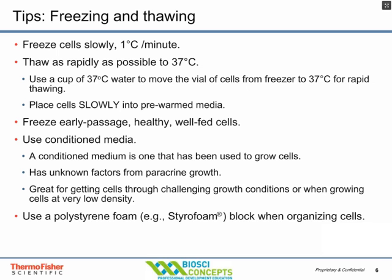When we thaw cells, most cell death occurs around minus 50 degrees centigrade, so we always want to thaw cells as rapidly as possible at 37 degrees. My recommendation is to bring 37-degree water in a cup right to the freezer, take your cells out, immediately put them at 37 degrees, shake the frozen vial, then move them into a 37-degree water bath. When all the ice is melted, remove your cells and spray with alcohol multiple times before opening the vial.